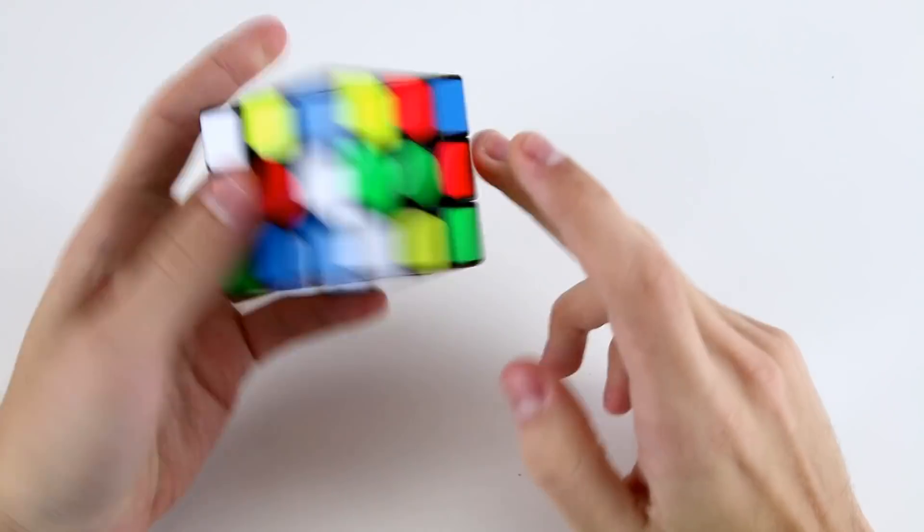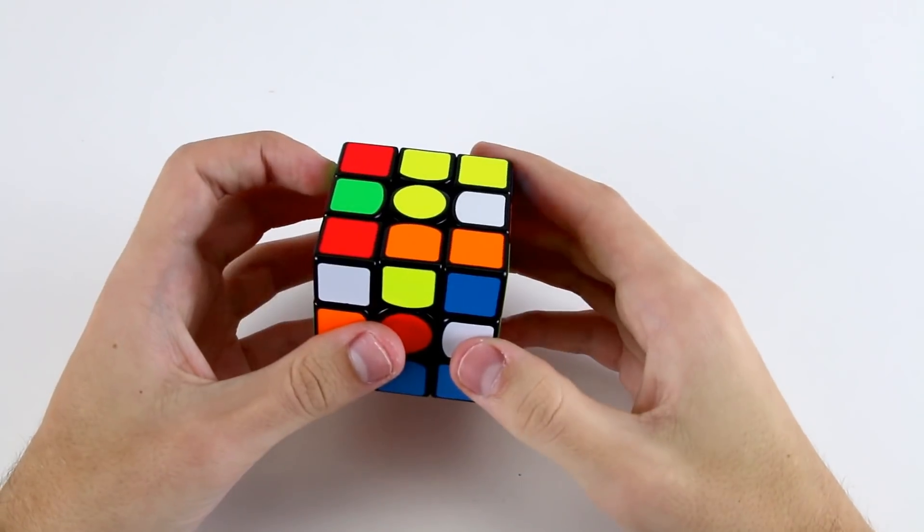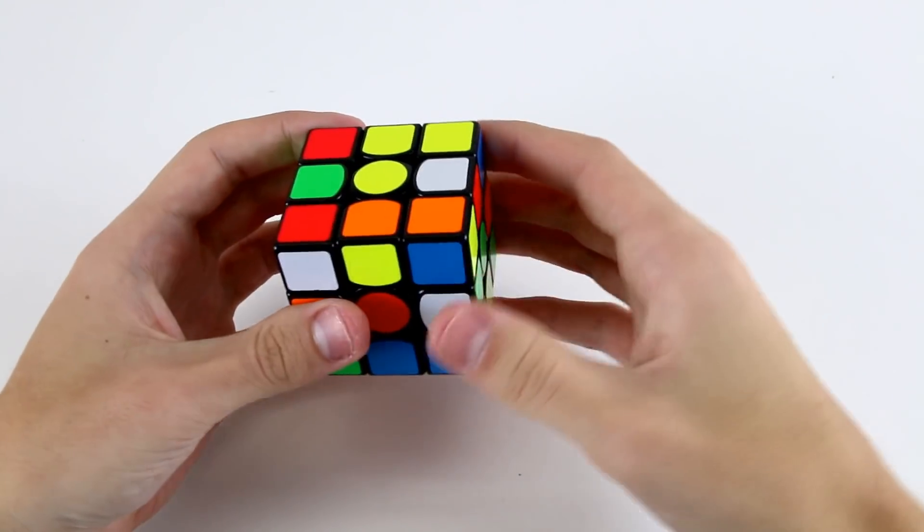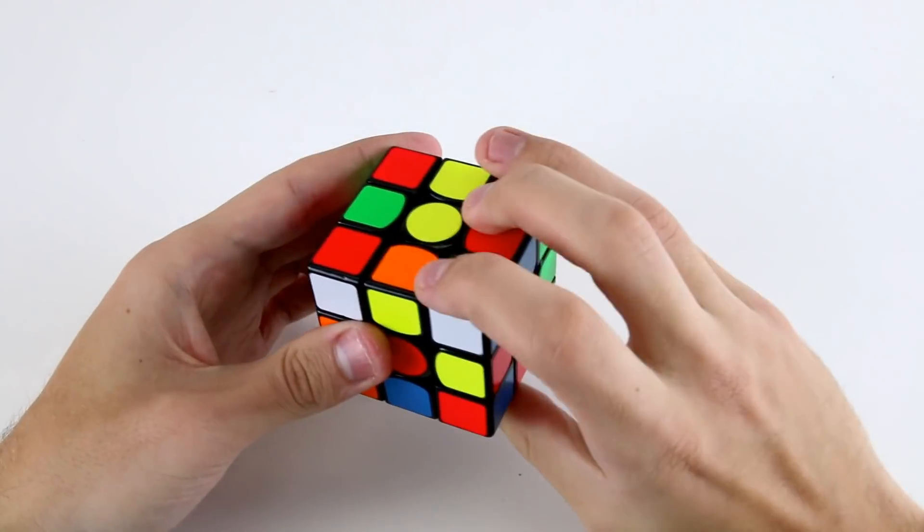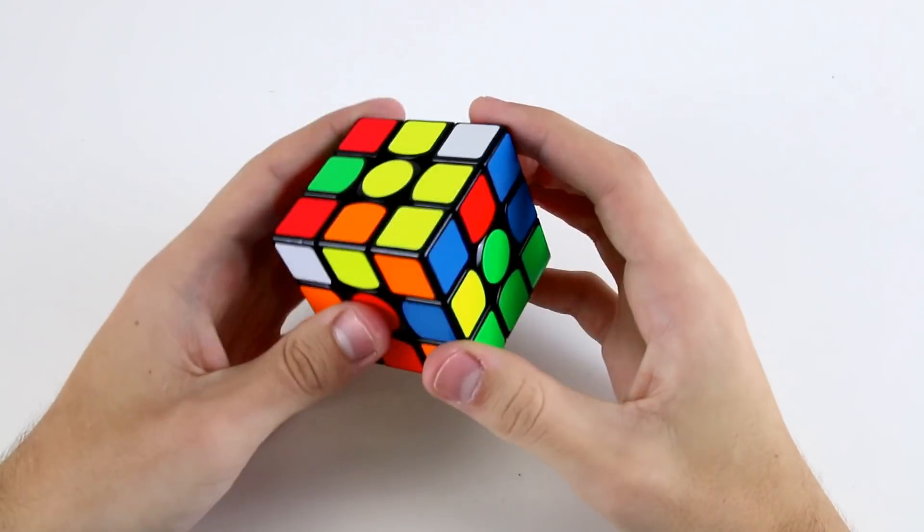Then these two I can do in a few different ways. I can either go U R prime F2 or to do a two generator I can go D R2 prime D prime R like that.